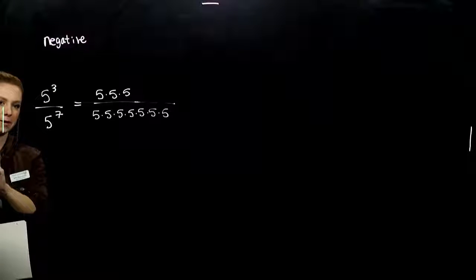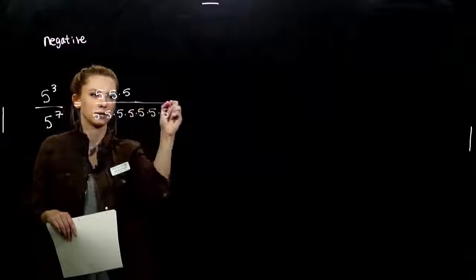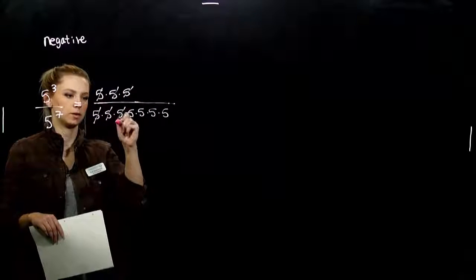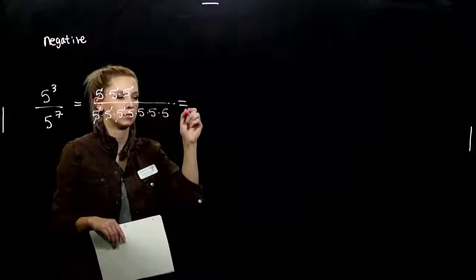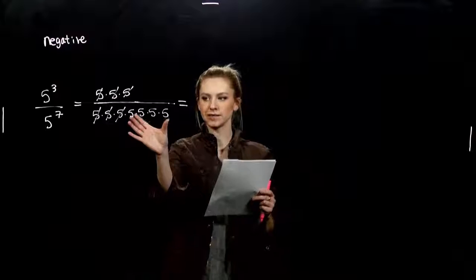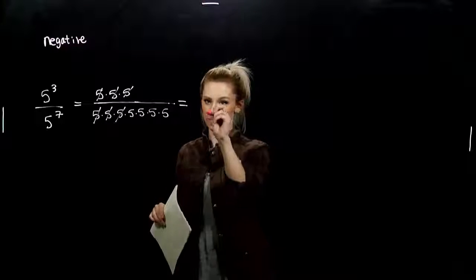So how can we simplify? What can we get rid of? How many factors of 5? So I've got one up top, one below. One up top, one below. One up top, one below. So where are the extra 5s existing now? Down below, so they need to stay there.